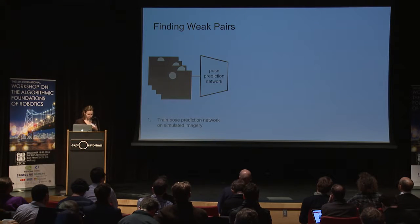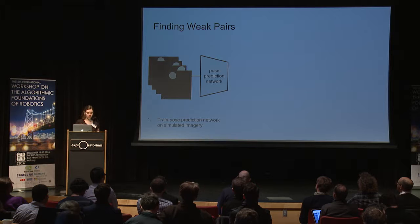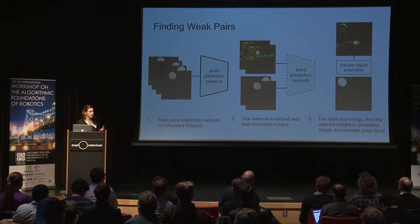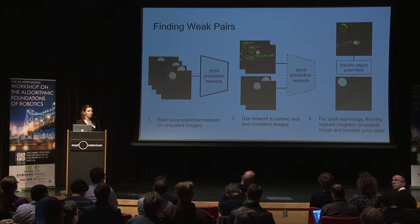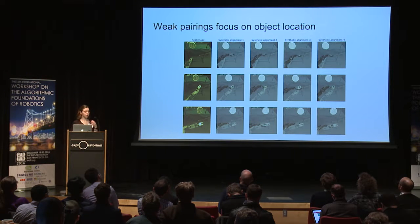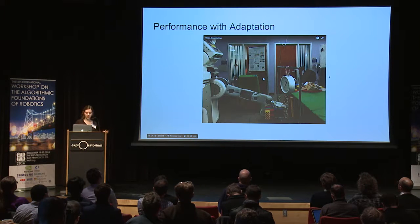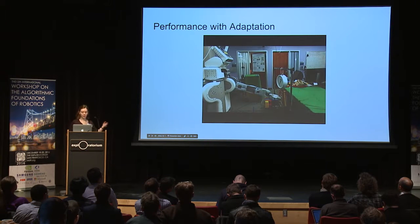To find the pairs, we use a simple approach: we first train a target object position-predicting network on just the simulated images, then use this network to embed both the synthetic and real images. For each real image, we find the nearest neighbor in this embedding to mark the synthetic and real image as a pair — doing nearest-neighbor matching in a feature space sensitive to the target object position. This gives us near-pairs where the target object is in the same position, and we don't care about the arm position since we want a representation sensitive to the target object. With this adaptation method applied to the manipulation task, the robot is able to correctly perceive the hook's location and place the loop of rope on top of it.